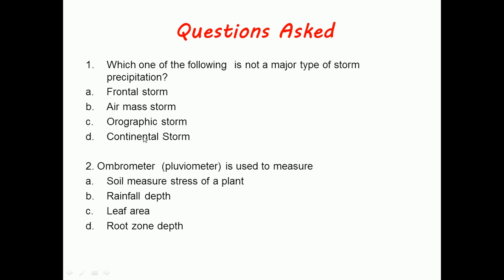We have read that ombrometer, pluviometer, and hydrometer are synonyms to rain gauge, and rain gauge is used to measure rainfall depth or precipitation. The correct answer is option B, rainfall depth.